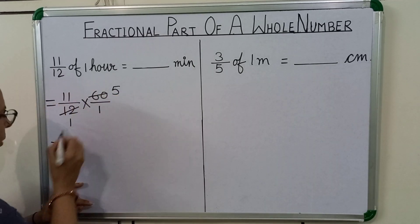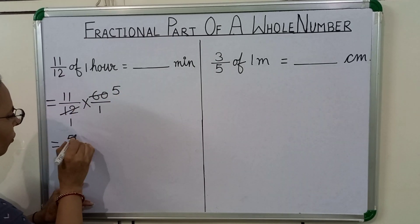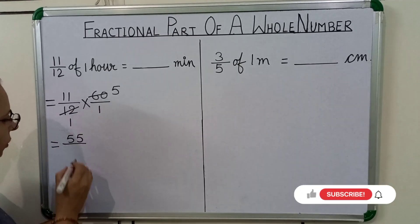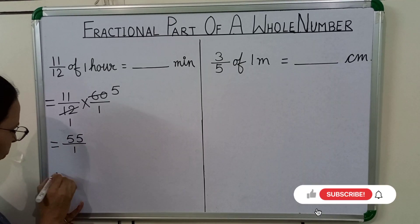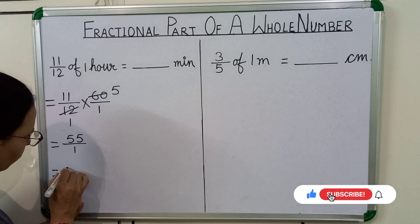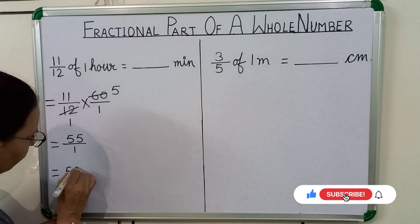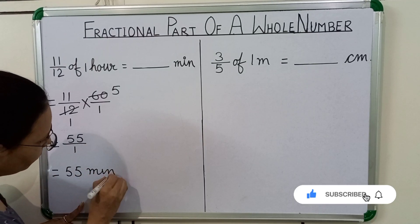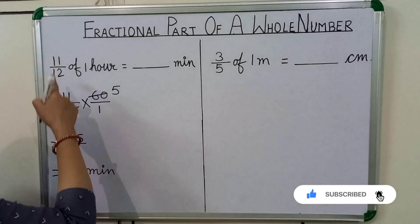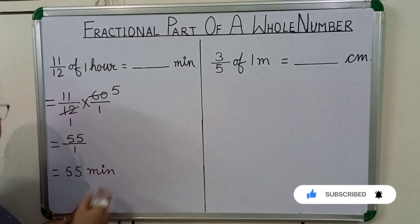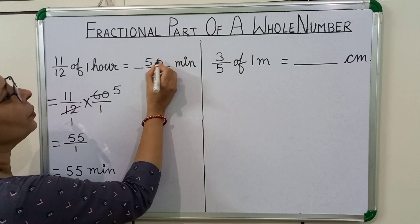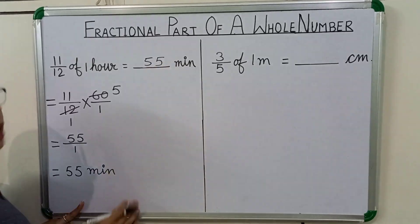We will multiply numerator to numerator and denominator to denominator. 11 times 5 is equal to 55. 1 times 1 is equal to 1. 55 upon 1 is equal to 55. We will write here 'minutes'. So, 11 twelfth of 1 hour is equal to 55 minutes.